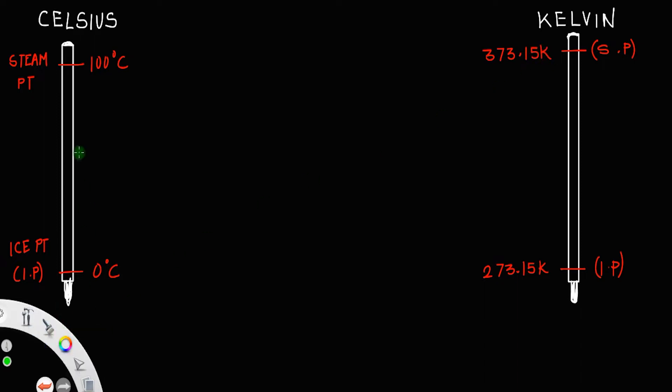Suppose you have a temperature C on the Celsius scale which is equal to K on the Kelvin scale. Then how will you relate this C and K?